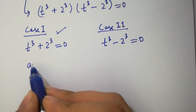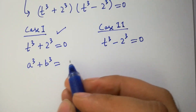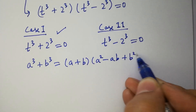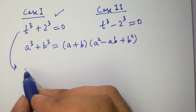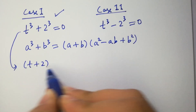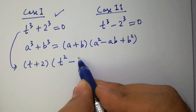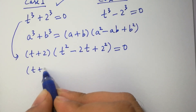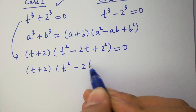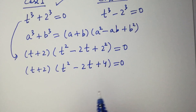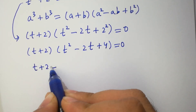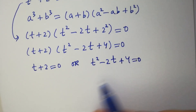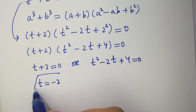Since a cubed plus b cubed equals (a plus b)(a squared minus ab plus b squared), it will be (t plus 2)(t squared minus 2t plus 4) equals 0. Either t plus 2 equals 0, or t squared minus 2t plus 4 equals 0. So t equals minus 2, which is our first real solution.